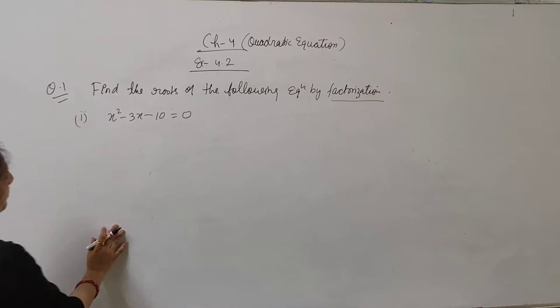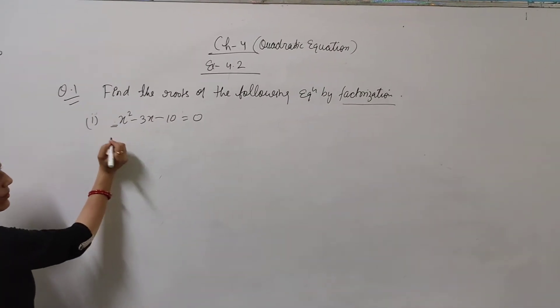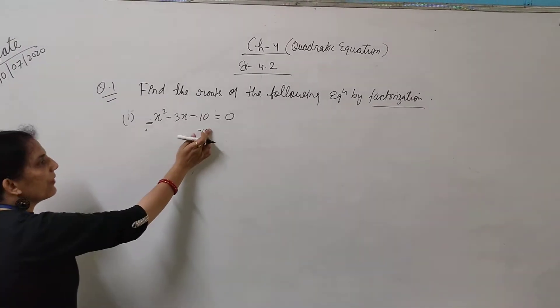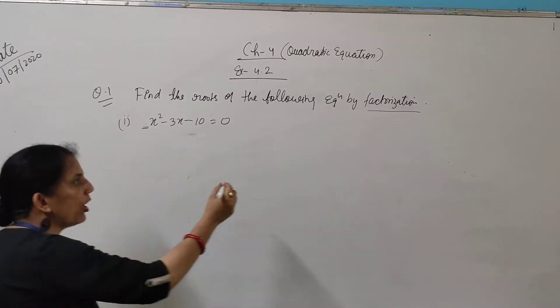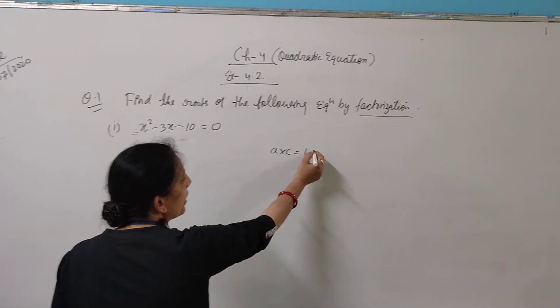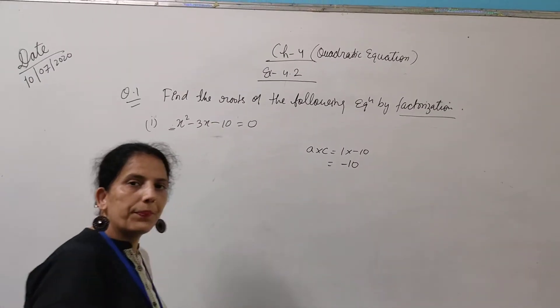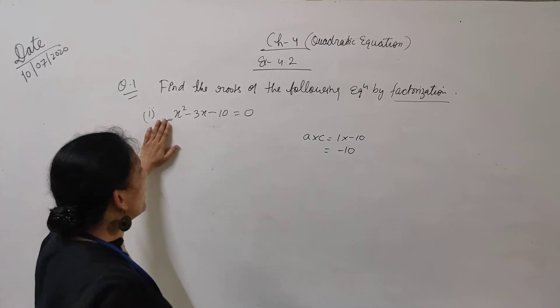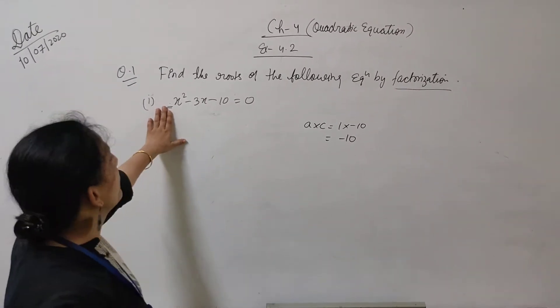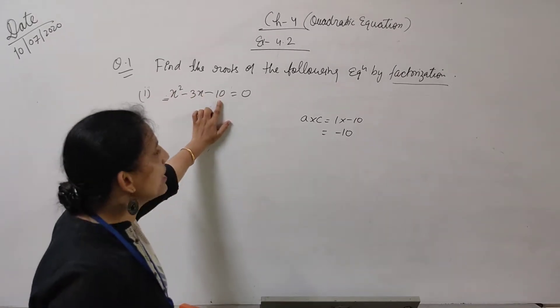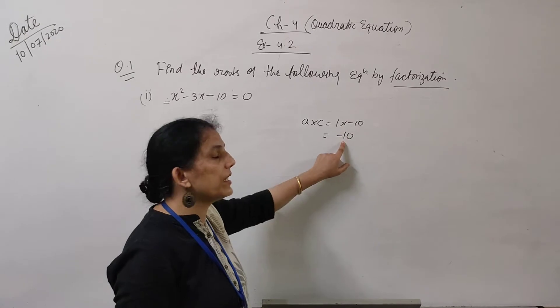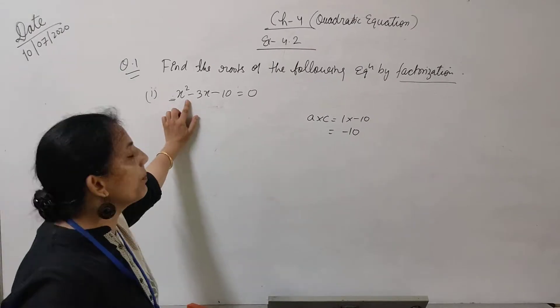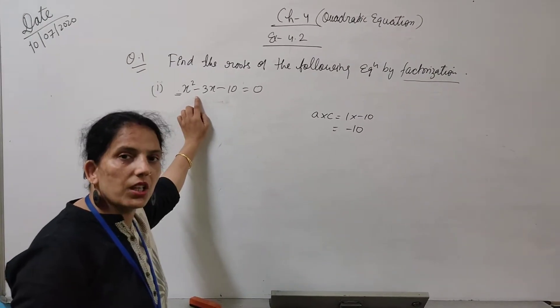What I have told you in factorization here - what is the coefficient of x square? 1, which is positive, and the value of c is minus 10. So we have to multiply a and c. The value of a into c will come 1 into minus 10, which is minus 10. Yesterday I told you, if both are positive then we have to find the sum. If both are negative, then again we have to find the sum. Remember one thing - a is positive, c is negative.